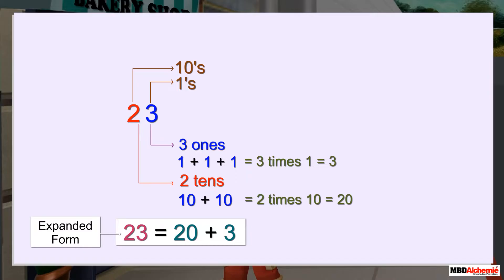Or, we can also write it as two times ten plus three times one. So, both of these can be considered as expanded form.